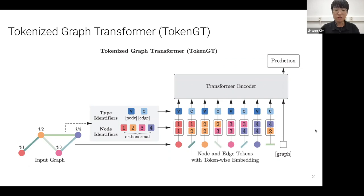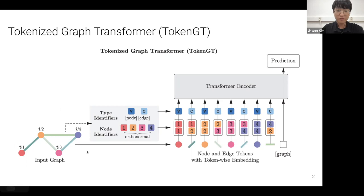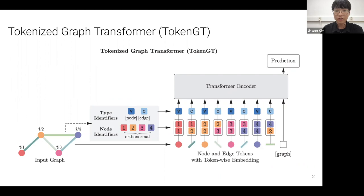Jumping to the conclusions: we present a model that represents about 80% of our contributions. Given a graph, unlike traditional message-passing neural networks, we tokenize the graph into independent node and edge tokens, augment those tokens with appropriate token-wise embeddings composed of node-wise identifiers and type identifiers specifying whether a token is a node or edge, then feed them to a transformer encoder.